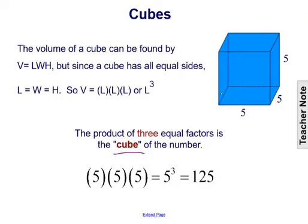We have a cube that has a length of 5, a width of 5, and a height of 5. So the length, the width, and the height are all equal to 5.